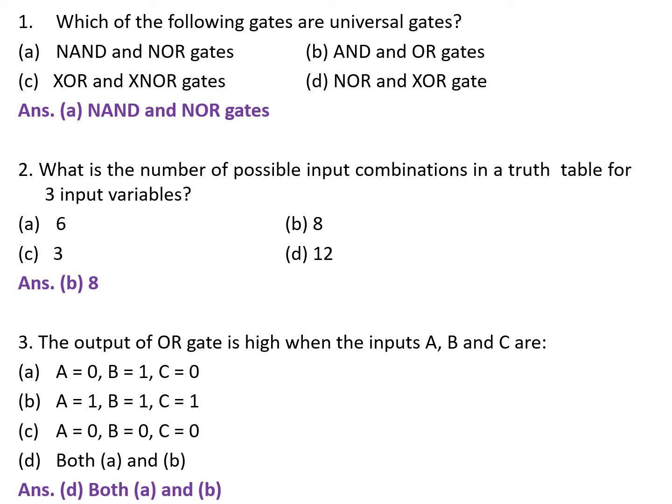Next question: the output of an OR gate is high when inputs A, B, and C are — A. A=0, B=1, C=0. B. A=1, B=1, C=1. C. A=0, B=0, C=0. D. Both A and B. The correct answer is D — both A and B options are correct.